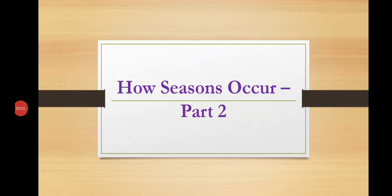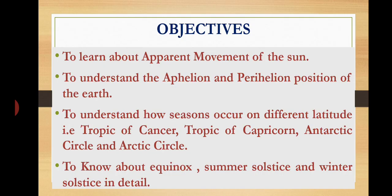Hello everyone, welcome to Geography Class Standard 7 — 'How Seasons Occur,' Part 2, Maharashtra State Board. Objectives: point one, to learn about apparent movement of the Sun; point two, to understand the aphelion and perihelion position of the Earth; point three, to understand how seasons occur on different latitudes — Tropic of Cancer, Tropic of Capricorn, Antarctic Circle, and Arctic Circle; point four, to know about equinox, summer solstice, and winter solstice in detail.